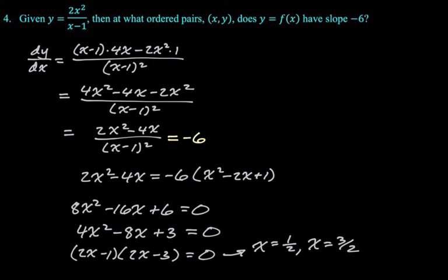And then we need to take those and find the x, y ordered pair, which means we got to plug in 1 half to here and then also 3 halves to there. Plugging in 1 half, you get 2 times 1 fourth is 1 half divided by negative 1 half. 1 half divided by negative 1 half is negative 1. And then plugging in 3 halves, we are going to get 9 fourths times 2 is 9 halves divided by 1 half is 9. So we get that.